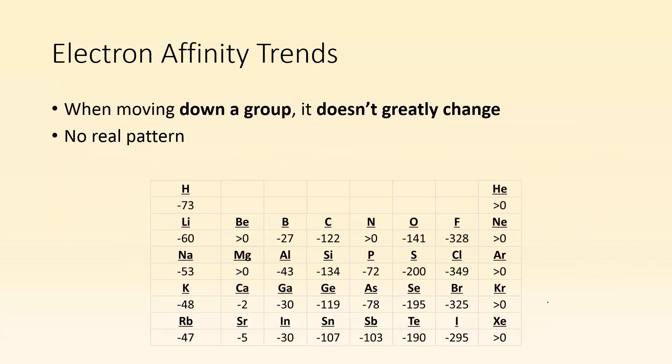Electron affinity trends: going down a group, it doesn't greatly change. There's no real pattern. If you take a look, you can kind of see as you go down a group, maybe there is a little bit of a pattern, but it's not really any pattern. It's not enough of a trend to say that there is a trend. As you go down a group, it doesn't greatly change. They're all in the same ballpark for the most part.